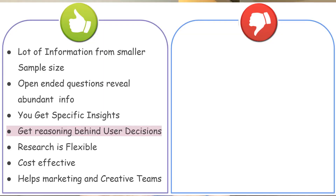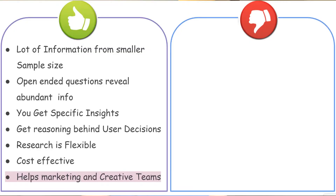Because the researcher directly engages with the user, they get to learn the reasoning behind user decisions. Qualitative research is also cost-effective and affordable since it is done with only a smaller number of respondents. One of the best things about qualitative research is that it helps marketing and creative teams formulate their plans — it helps them understand how to target a demographic segment by getting information directly from users.